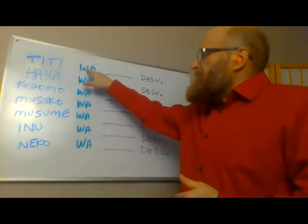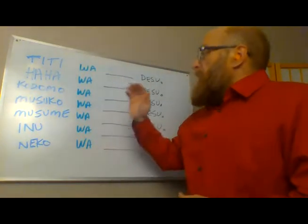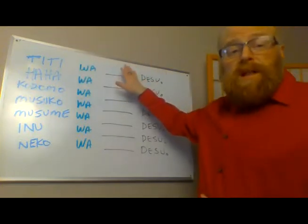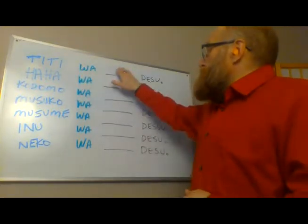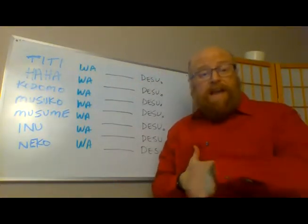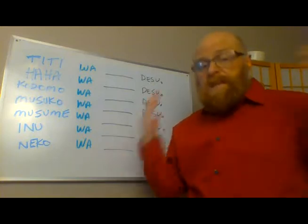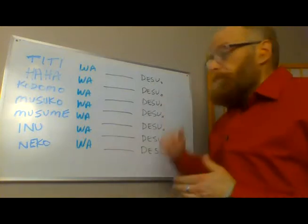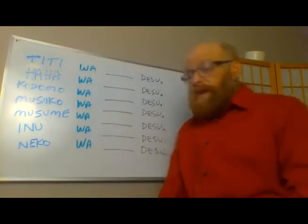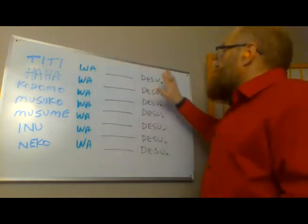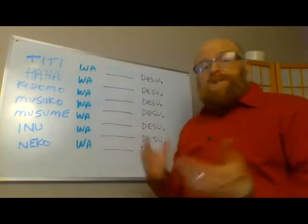Wa marks the subject and puts emphasis on what's coming after it. So it's going to be Chichi wa, and then Bill desu — my father's name is Bill. So Chichi wa Bill desu. In my case I would add Nakunari mashita, which means he's passed away, but if he's still living, you just stop there. Now try it by putting in your own father's name: Chichi wa [name] desu.